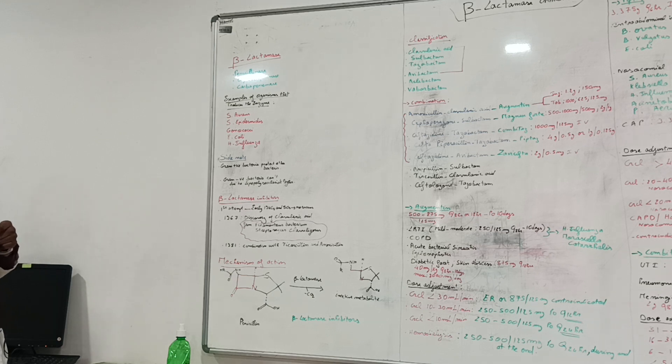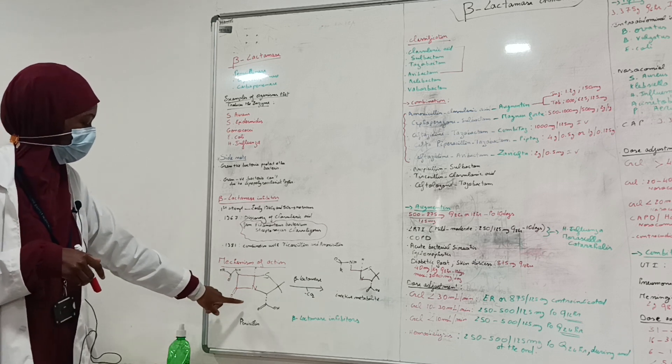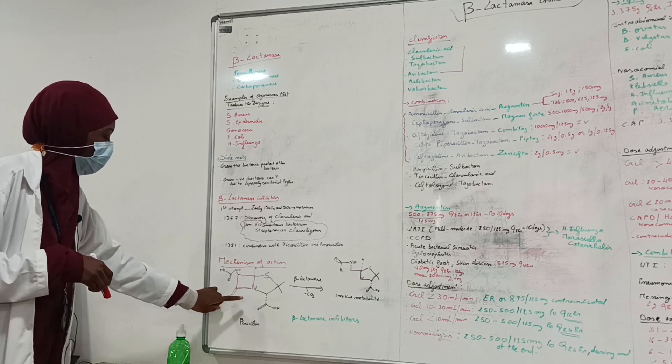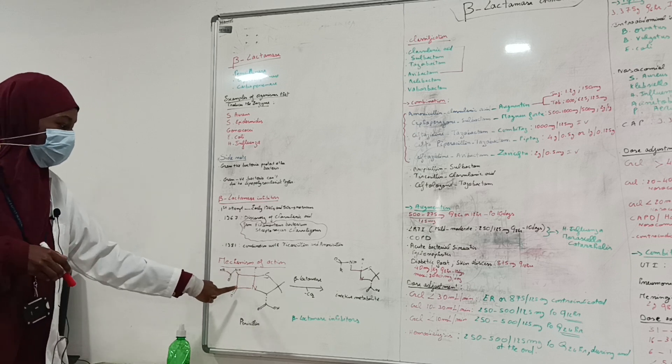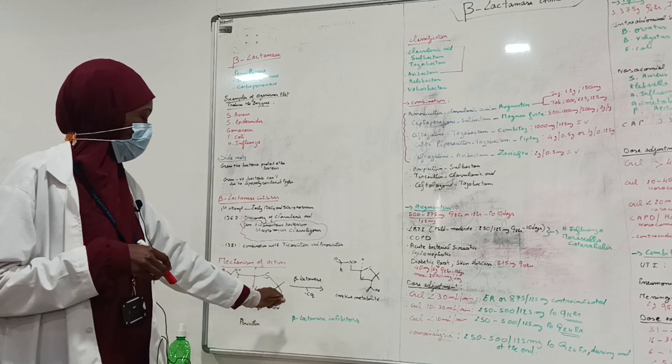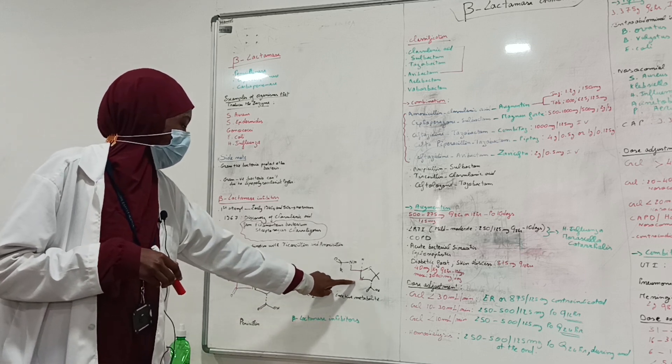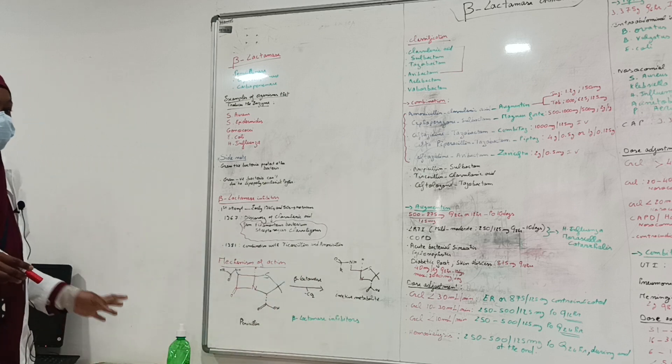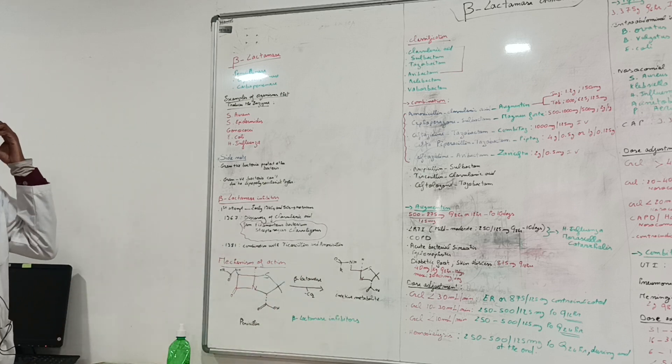Now let's see about the mechanism of action. Beta-lactamase enzyme, when it is released, this is penicillin molecule. In red here is the beta-lactam ring. What beta-lactamase does is it leads to the opening of this ring, which leads to a metabolite that is completely inactive. It doesn't kill microorganisms, nothing.